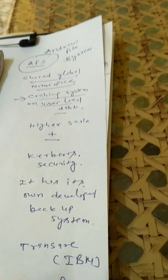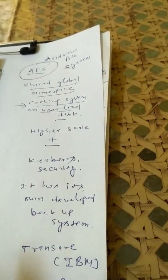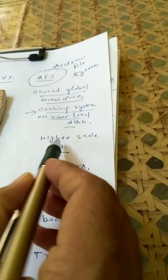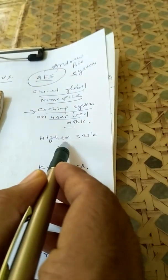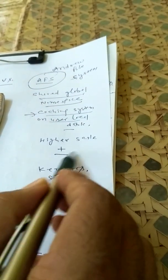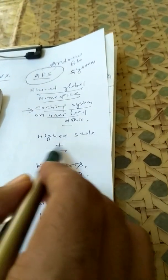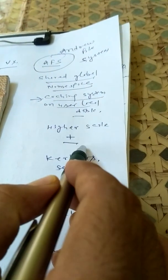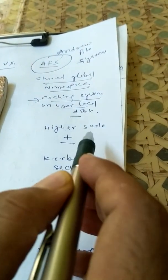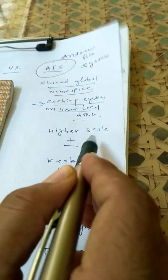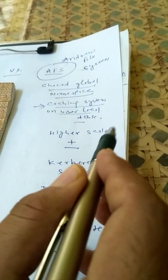Another parameter is scalability, meaning we can increase the number of users and the number of systems in the Andrew file system. So it basically supports scalability.